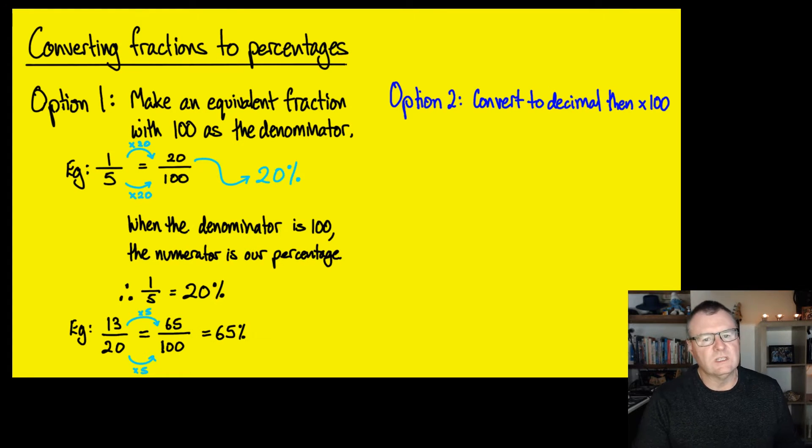Option 2, if you want to do it this way, you can convert it to a decimal first, and then multiply it by 100. I'm going to use the same examples, and we're going to use option 2, and just see if we get the same results.